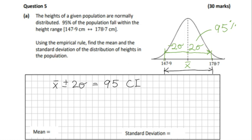So 178.7 subtract 147.9, and we get 30.8. Divide that by 4, and we get 7.7 centimeters.